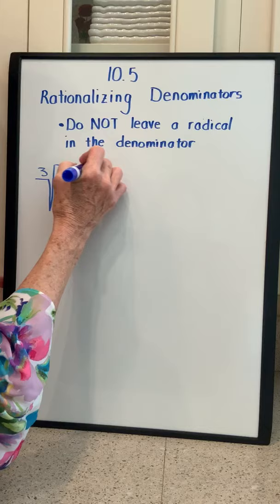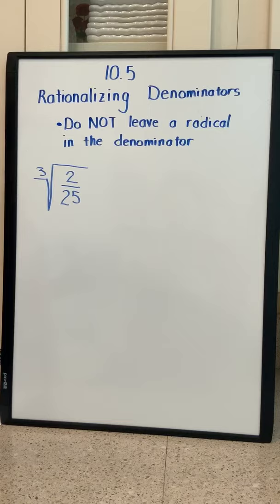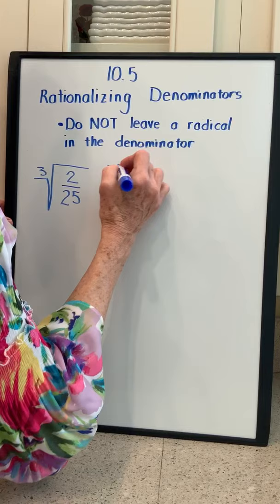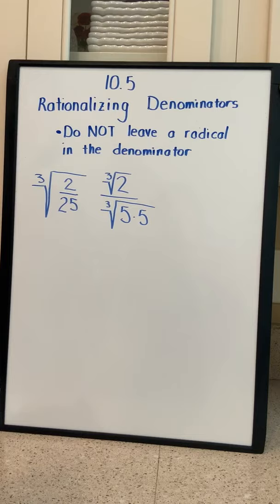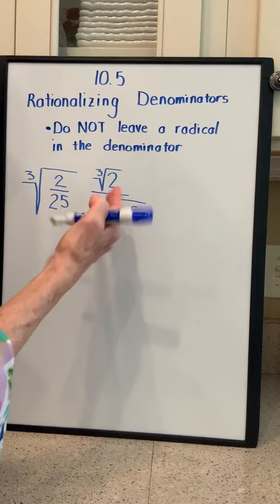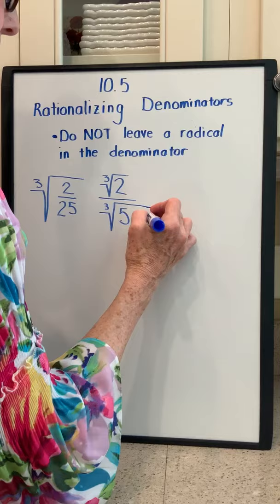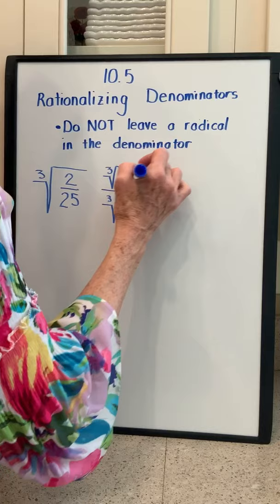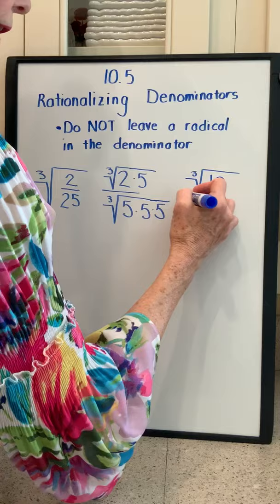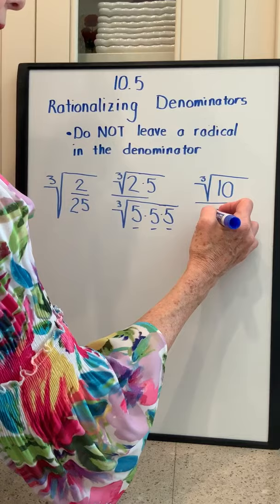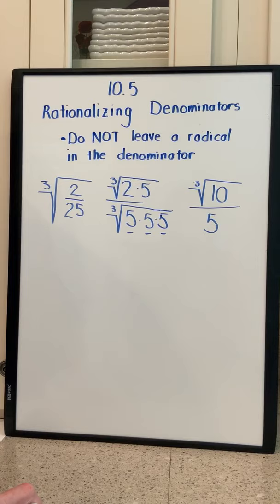The cube root of 2 over 25. It's easier to break this apart as the cube root of 2 over the cube root of 25, and write 25 as 5 times 5. Because this is a cube root, we need three 5s to take them out of the radical, so we multiply by another 5 in both the numerator and denominator. This gives the cube root of 2 times 5, which is 10, over — since 5 multiplied by itself 3 times comes out of the radical — just 5. So our answer is the cube root of 10 over 5.